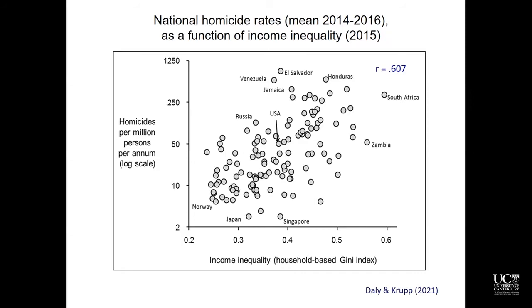Back to this slide: here is the distribution of homicide rates plotted against income inequality, a household-based GINI — a standard economist's measure — for every country for which relevant data were available, meaning a respectable income survey enabling computation of the distribution of incomes. There's going to be major noise here, since the quality of income surveys is highly variable. Nevertheless, you get a pretty good relationship between these two variables. For the Americans among you, you may have noted that the USA looks like a kind of middle-of-the-pack country in this figure — above the median in both income inequality and homicide rate, but kind of in the middle of the pack.